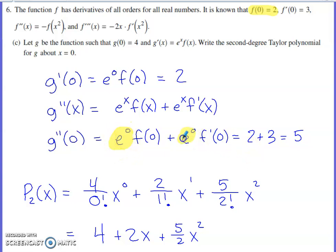And if I evaluate that second derivative at 0, I end up with a 1 in this spot, I end up with a 1 in this spot. So my second derivative for g evaluated at 0 ends up being f(0), which is 2, plus f'(0), which is 3. So g''(0) ends up being 5.